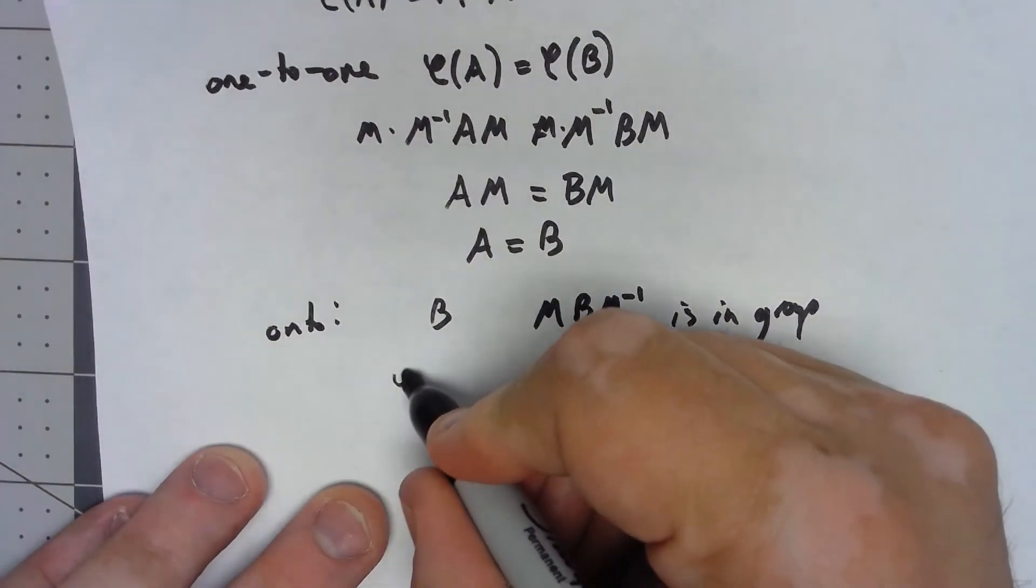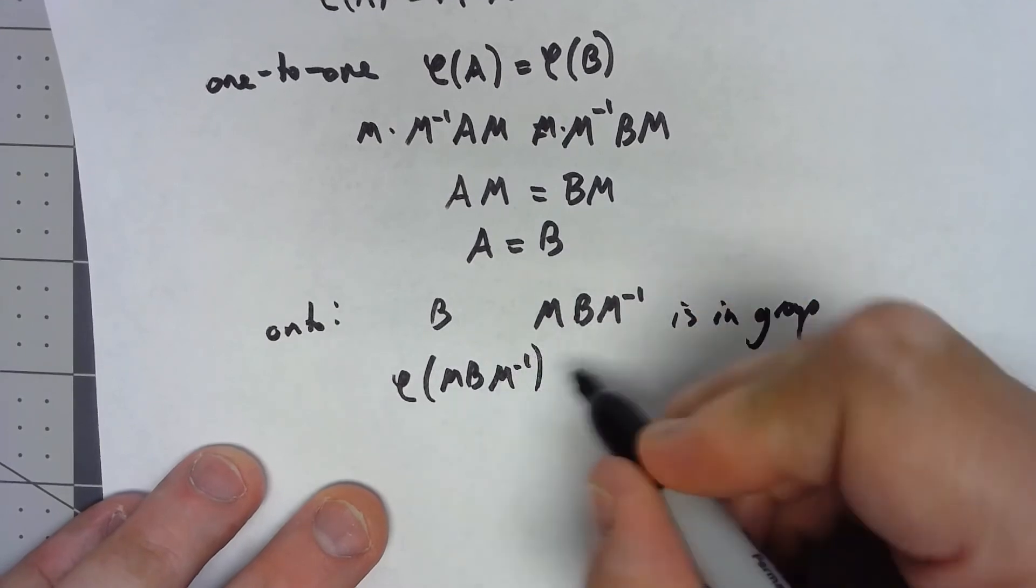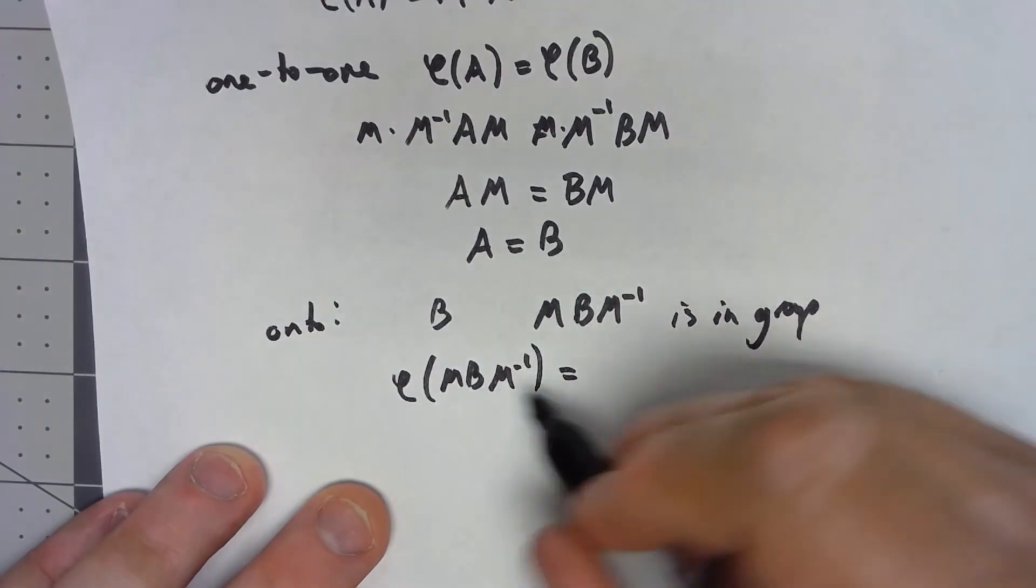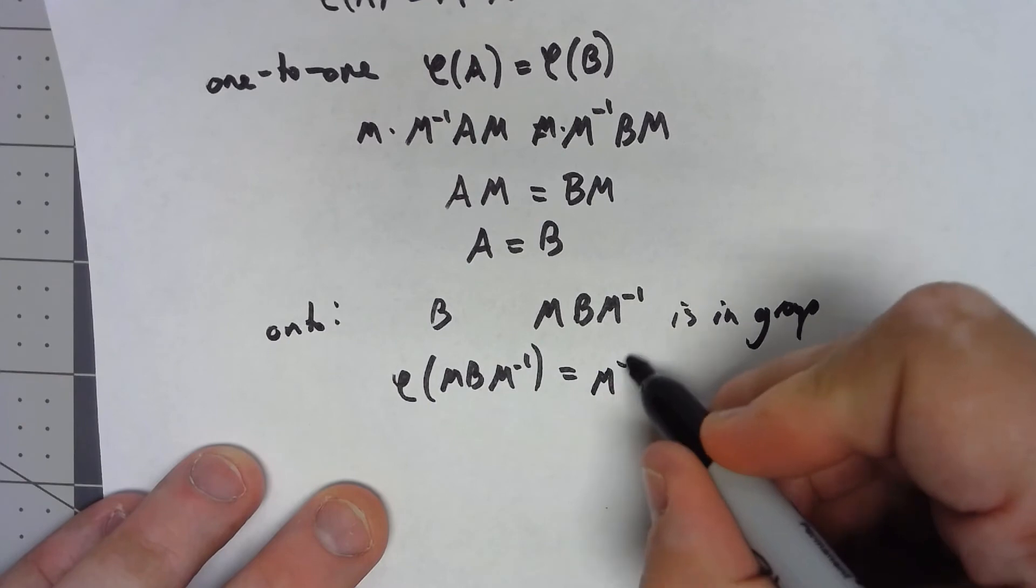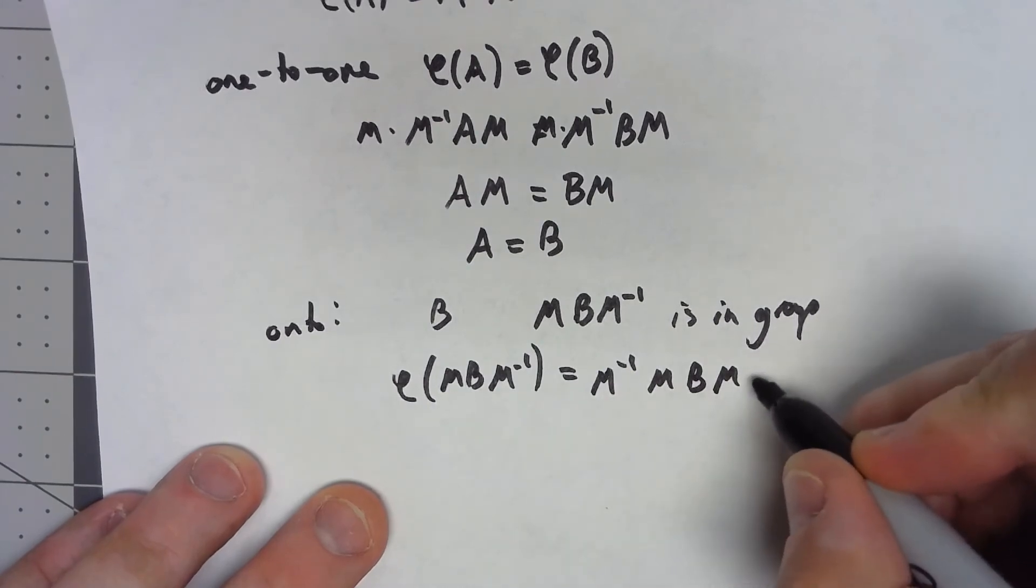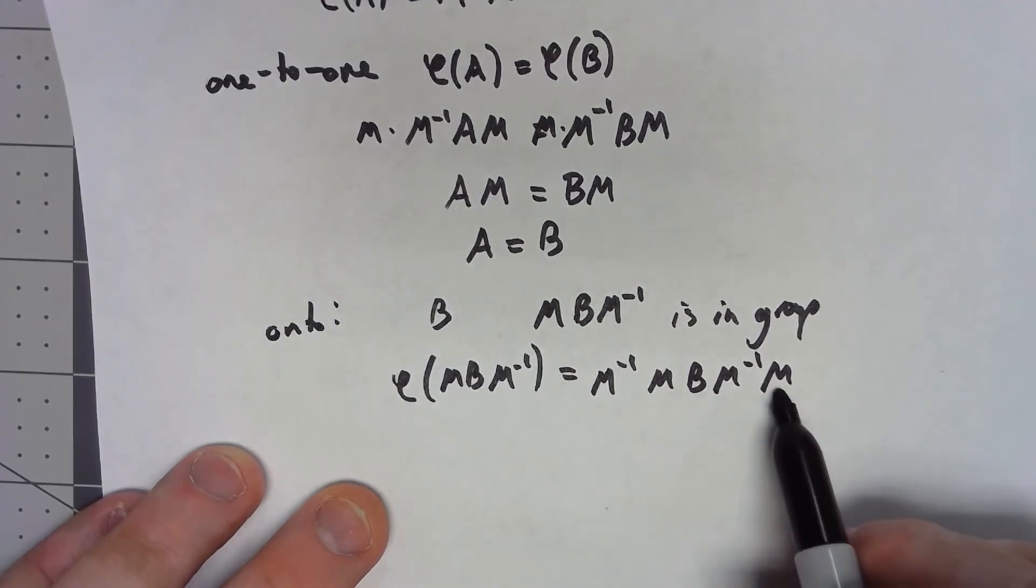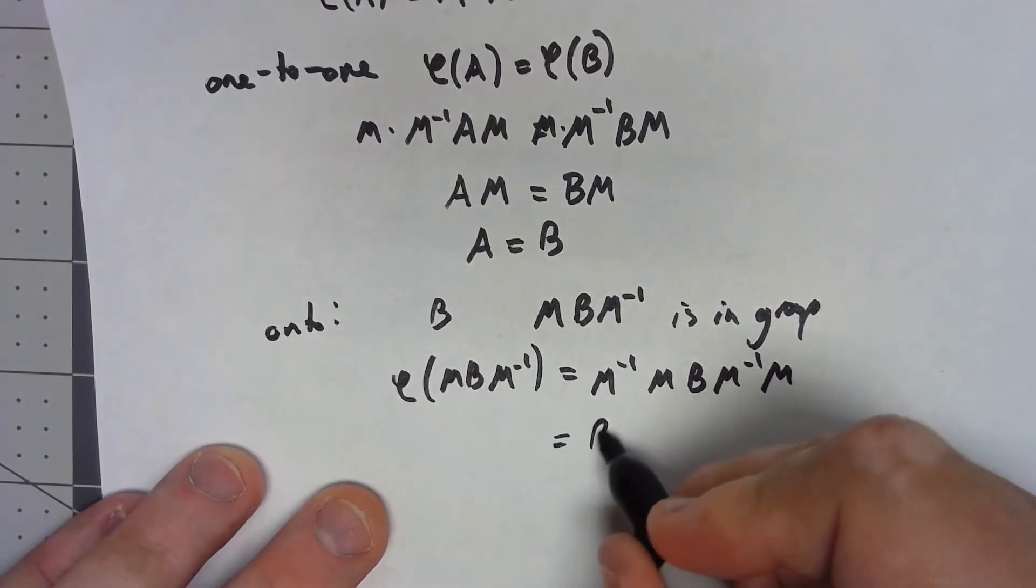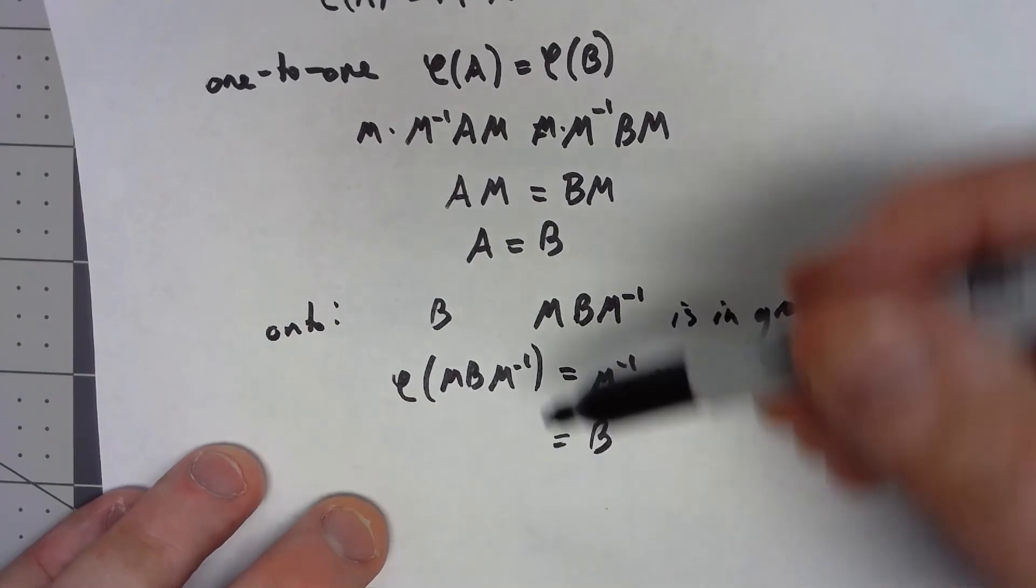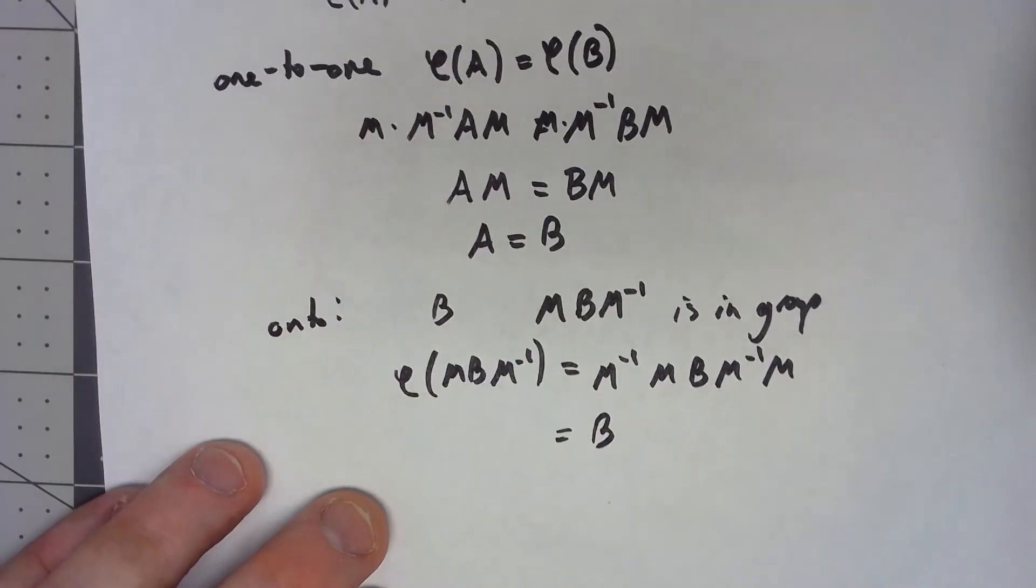But then, phi of MBM inverse is M inverse MBM inverse M. And again, we're going to get an identity matrix here, we're going to get an identity matrix here, the whole thing's going to be B, there we go. For any B, we've found something that maps to it, therefore it's onto.